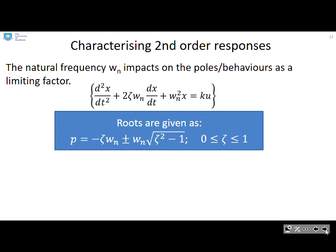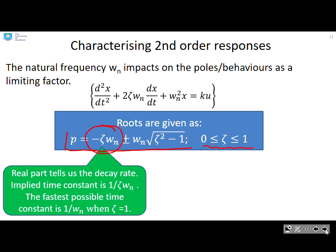Characterising second order responses. The natural frequency ωₙ impacts on the poles and behaviours as a limiting factor. The roots are given as p = -ζωₙ ± ωₙ√(ζ²-1), where 0 ≤ ζ ≤ 1. So the -ζωₙ is the real part, so that tells us about the decay rate that's going to go into the exponential. The implied time constant is 1/(ζωₙ), so the fastest possible time constant is when ζ = 1, which gives you 1/ωₙ. If ζ is less than 1, the time constant is going to be larger, so you're going to converge slower.